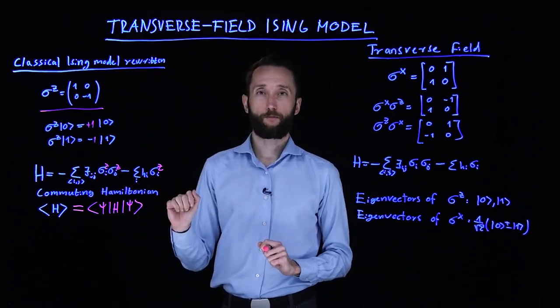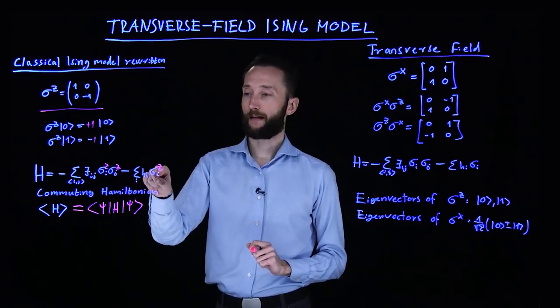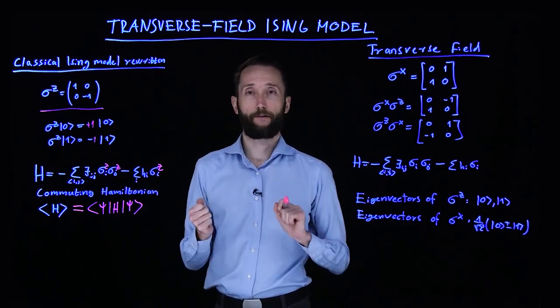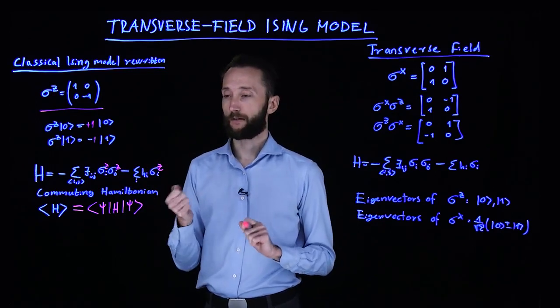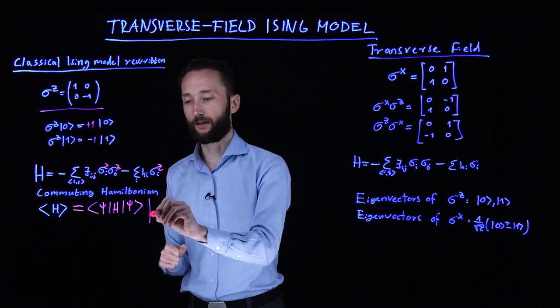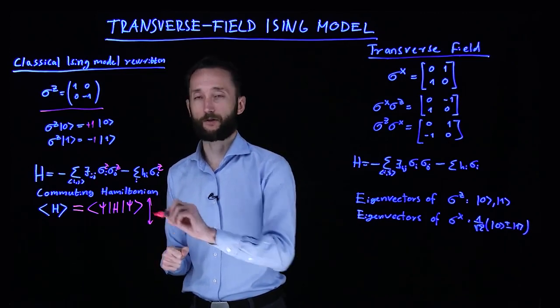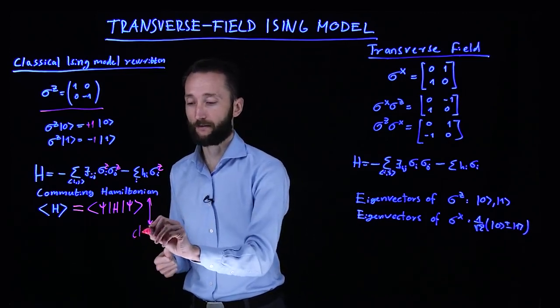This Hamiltonian is commuting, which means that every single one of these matrices commutes with one another. When you have a commuting Hamiltonian, that's actually not very interesting from a quantum mechanical perspective. These correspond to classical systems.